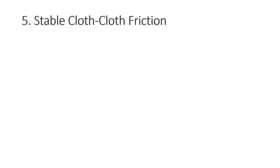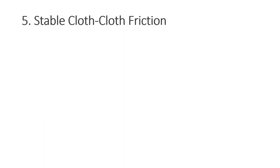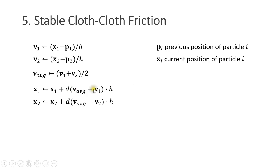The last trick is to use stable cloth-cloth friction. Let's assume we have two particles with current position x1 and previous position p1. We can use the size of a substep and compute their current velocity as current position minus previous position divided by h. Next, we compute their average velocity. Then we push their current velocity towards the average velocity. As you can see, the time step size cancels and can be omitted.